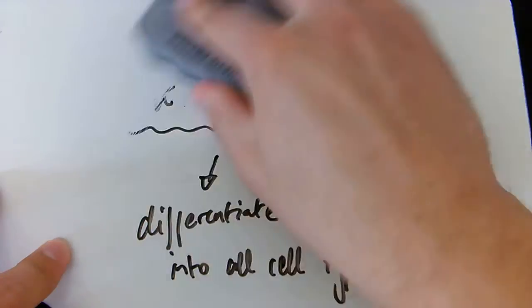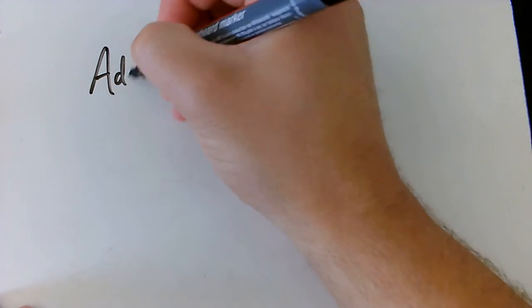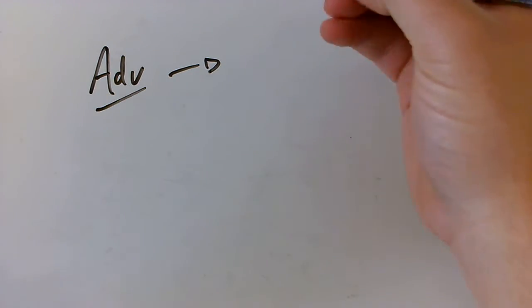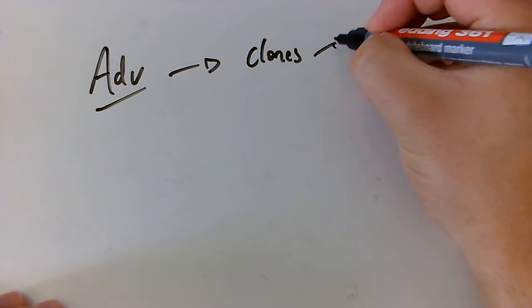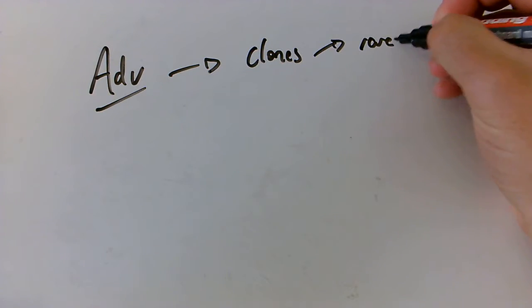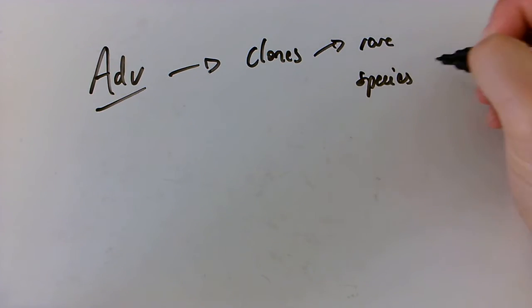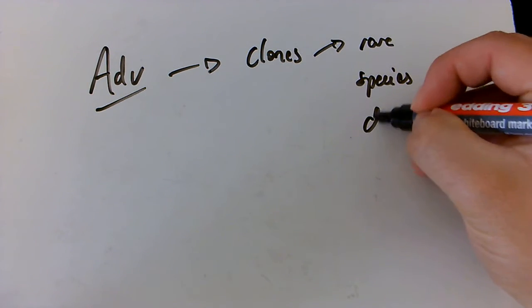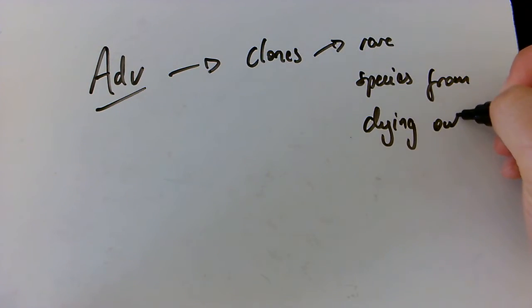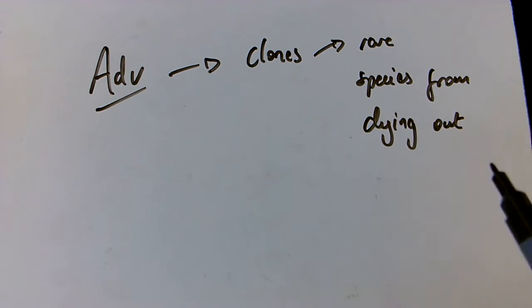So if we're thinking about that, that's going to form a massive advantage for the use of plant meristem cells. So we can use that process of clones to prevent rare species of plant from dying out. So that can be a really good process of making sure we can prevent extinction of that type of plant.